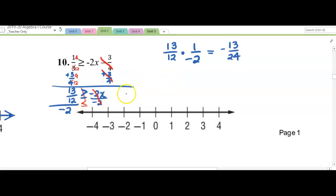So we ended up with negative 13 over 24 is less than or equal to x, which makes me flip back to get x on the left. That's approximately negative half, right about here on the number line, and then I'll shade to the right.